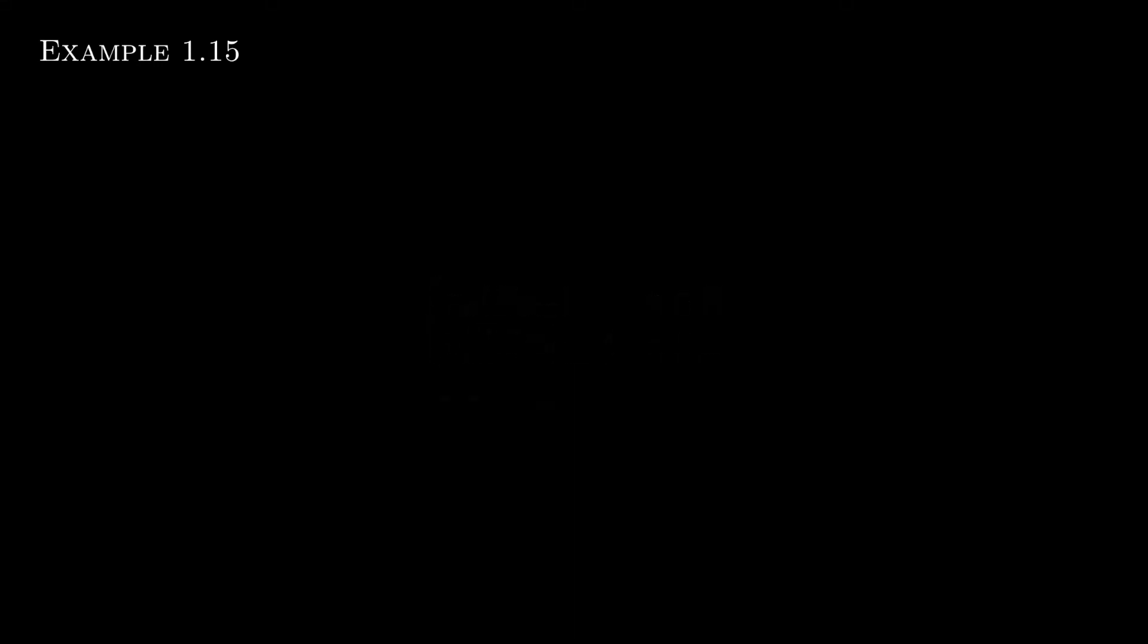We then observe that a z-graded abelian group is equivalently an n-sequence of n-graded abelian groups together with isomorphisms that correspond to shifting down one. So look at this example here, and maybe just suppose that the ai are just the natural numbers, so a0 is zero, a1 is one, etc.